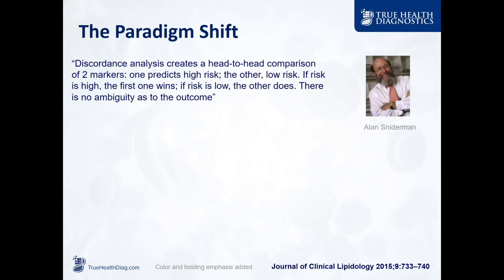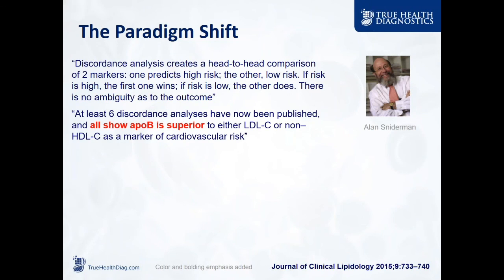Snyderman says this type of discordance analysis creates a head-to-head comparison of two markers — one predicts high risk, the other low risk. There's no debate or ambiguity when you're doing this type of statistical analysis. At least six discordant analyses have now been published, all showing ApoB is superior to LDL cholesterol or non-HDL cholesterol. If evidence matters — game, set, match. That should settle it.